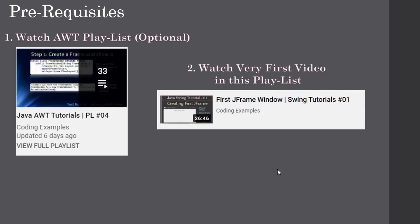This video assumes that JFrame was already created. If you want to know how to create JFrame, you can watch the very first video in this Swing tutorial. The AWT playlist is optional but will provide useful background information for these Java Swing tutorials.